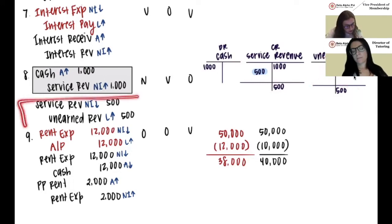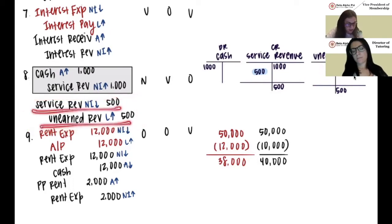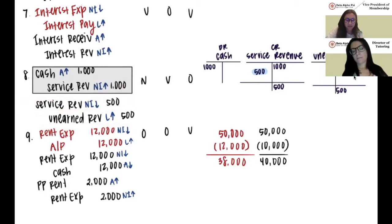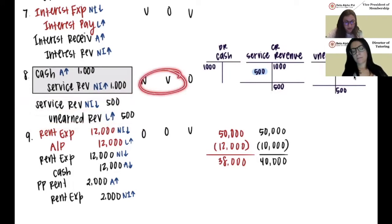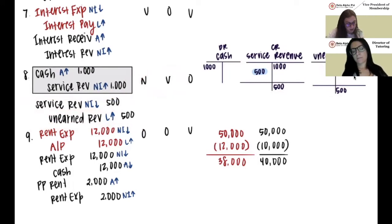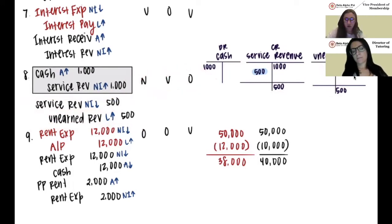Looking at just the missing AJE: neither account affects assets, so no effect on assets. Liabilities should have been increased but weren't, so liabilities are understated. The AJE would have lowered net income, but it was never done, so net income was higher than it should have been — net income is overstated.